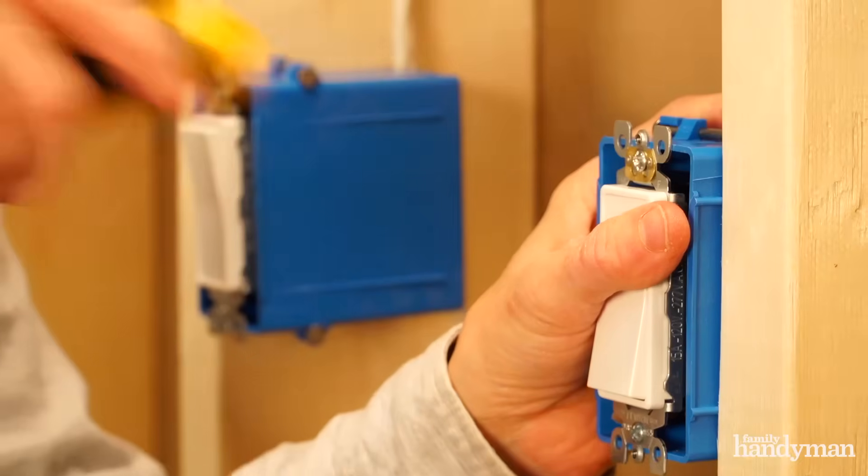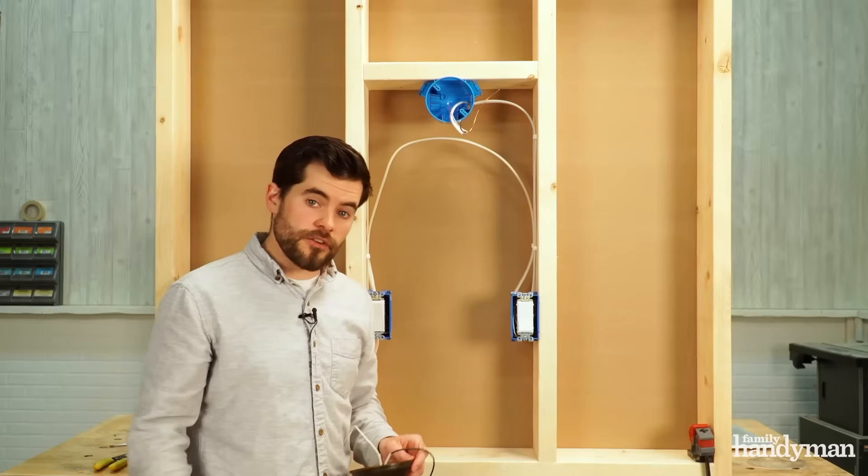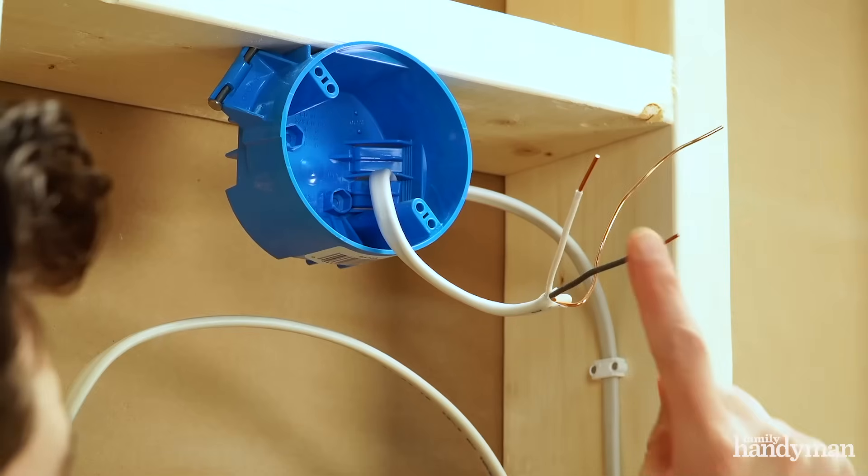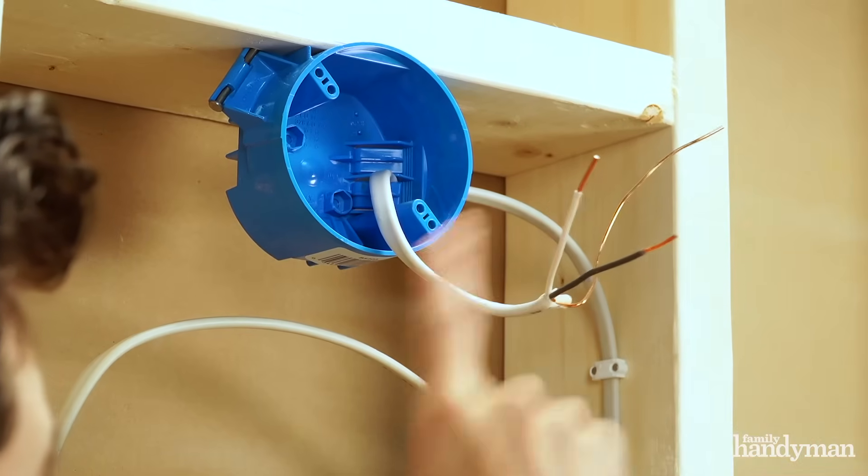Install the switch in the box and then it's time to install the light. Now you're ready to make the connections at your light fixture. Ground to ground, hot to hot, neutral to neutral.